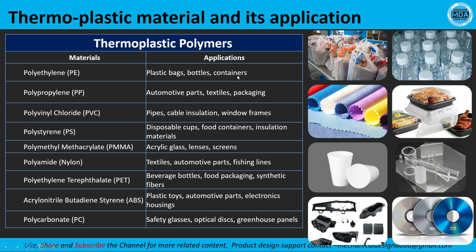For example, polypropylene is used in plastic bags, bottles, and containers, and is generally used in automotive parts, textiles, and packaging. In upcoming videos we will discuss different plastic materials in detail — their applications and properties. PVC, for instance, is used in pipes, and you can see thermoplastic polymer application images here.